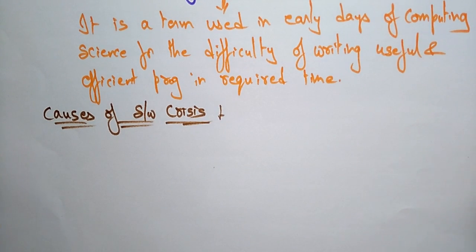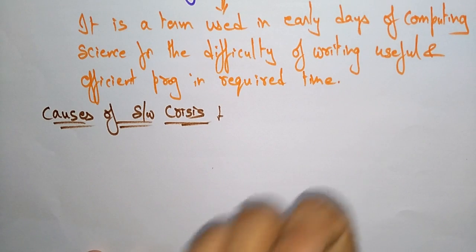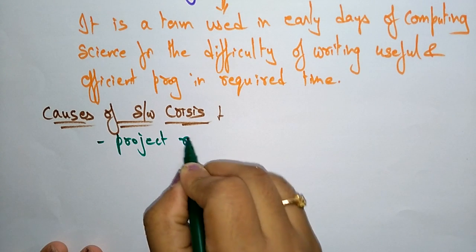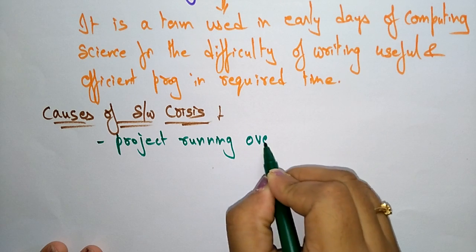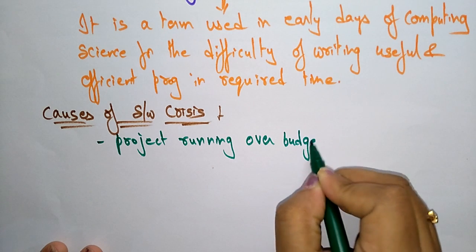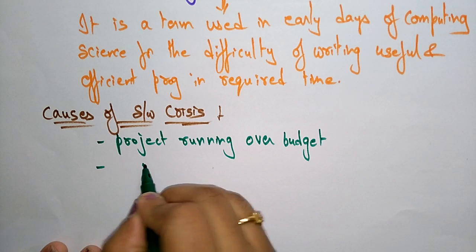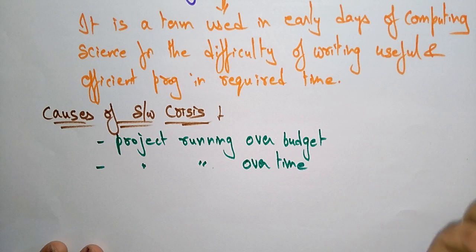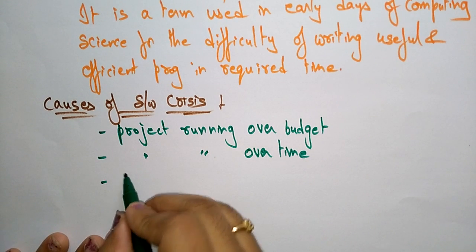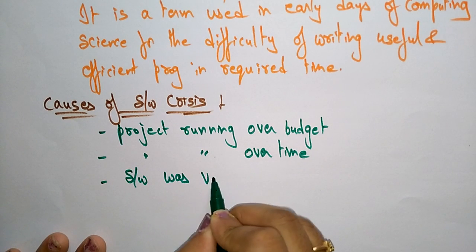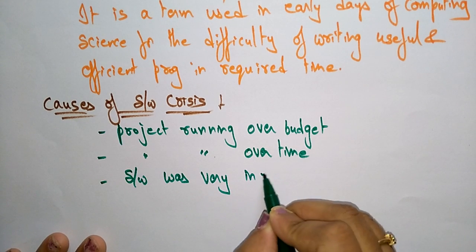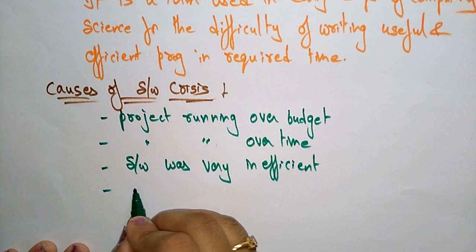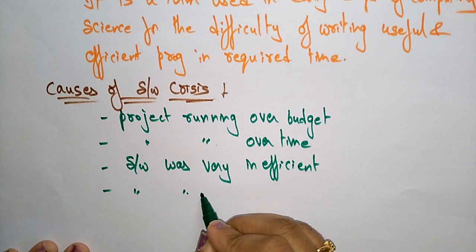The different causes of software crisis are: the project running over budget — if the project runs over budget, that leads to software crisis. If the project is running in overtime, meaning it is crossing the deadline, that also leads to software crisis. If the software was very inefficient or of low quality, that leads to software crisis.